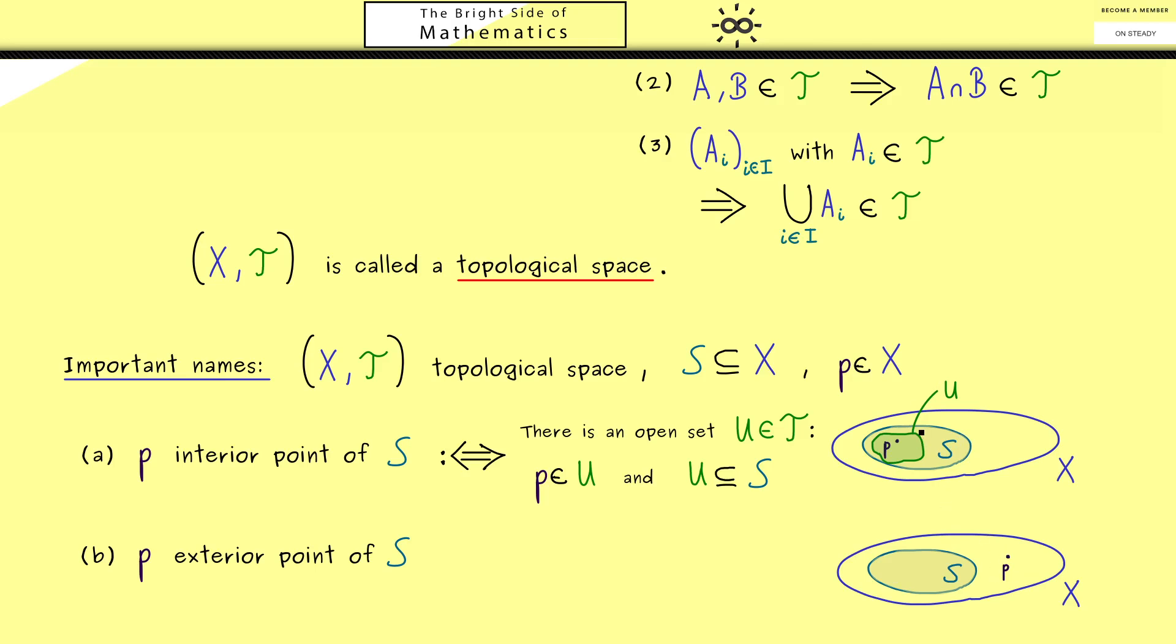However, as before, we want to lie outside even with an open set U. So visually speaking, we want some distance in both cases from the boundary of S. Hence, we need an open set U such that there is no overlap with S.